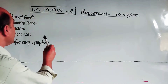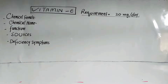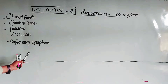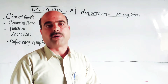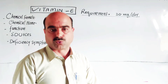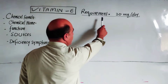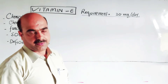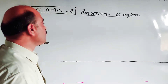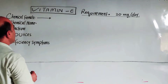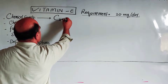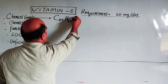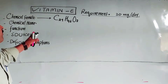Students, today we will discuss the chemical formula of Vitamin E, its chemical name, its functions, its sources, and daily requirement. The daily requirement of Vitamin E is 30 milligrams per day. The chemical formula of Vitamin E is C29H46OH.